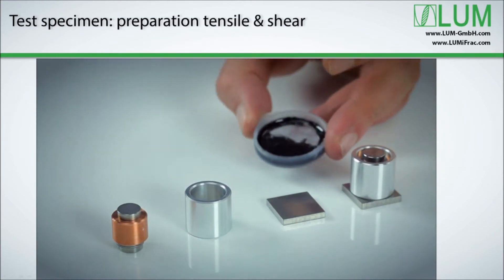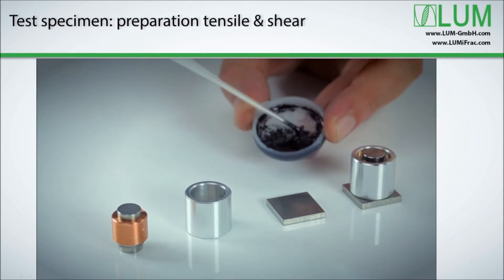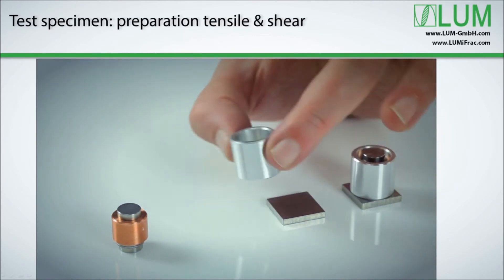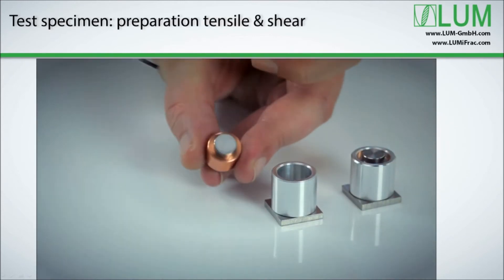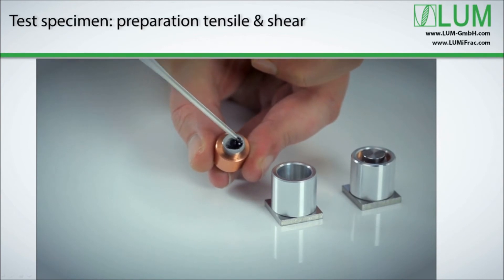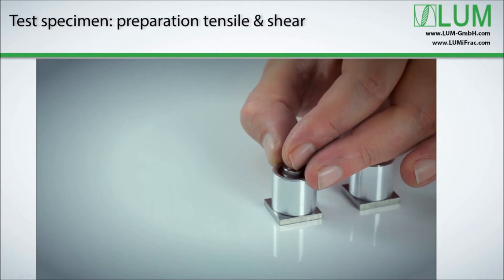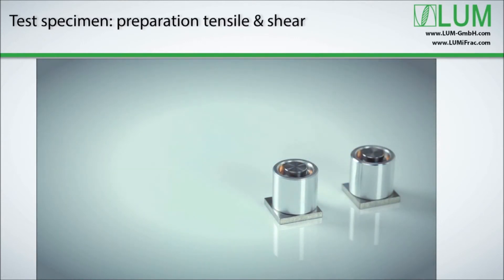Here you can see how that works in real life. First, the adhesive is applied onto the test stamp's adherent surface. Now the test stamp is inserted into the guiding sleeve, which has been placed on the sample surface. The test stamp is moved downward and attached to the substrate. During the joining process, the stamp is guided by the sleeve.